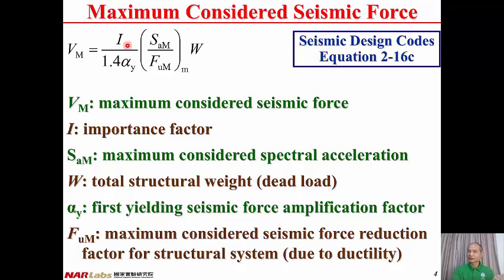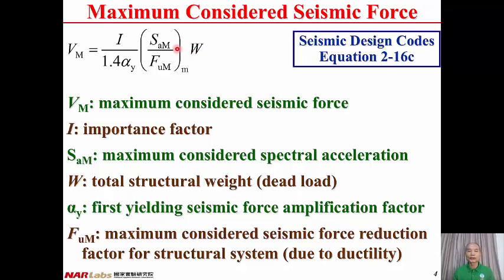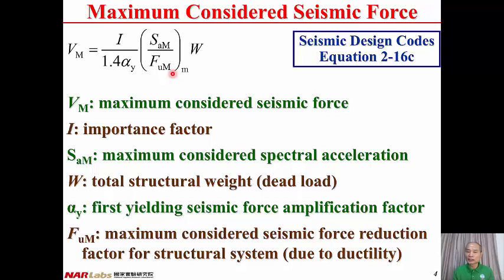Compared with Design Base Seismic Force, the importance factor I is the same, the first yielding seismic force amplification factor alpha_y is the same, and the total structural weight W is the same. However, SAM — the maximum considered spectral acceleration — is different from the design basis spectral acceleration, and FuM — the maximum considered seismic force reduction factor due to ductility — is different from the design basis one.